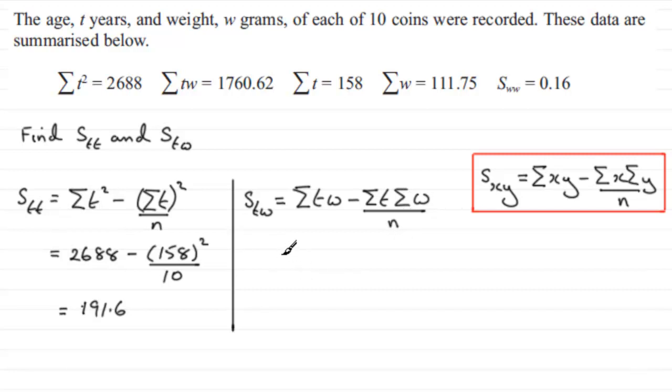And again, we just need to put our values in. Sigma TW up here is 1760.62, minus sigma T, 158, and that is being multiplied with sigma W, 111.75. And then that's all divided by N, N being 10. And again, if you work this out, you find that you get minus 5.03.